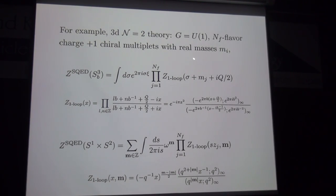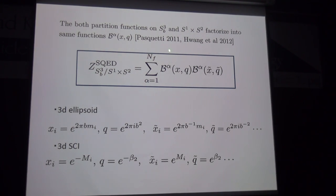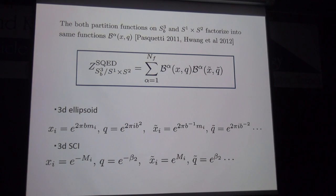For example, for three-dimensional N=2, gauge group U(1), with N_F flavors and a charge +1 chiral multiplet with real mass, after applying localization the partition function on the squashed ellipsoid takes a specific integral form. The partition function on S¹ × S² also takes the form of an integral with some complicated function. The key difference between the ellipsoid and S¹ × S² cases lies in the argument of this function: in the ellipsoid case Q is related to the squashing parameter and X to the mass, while in the superconformal index case Q is related to the fugacity and X to the fugacity for global charge.